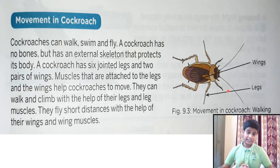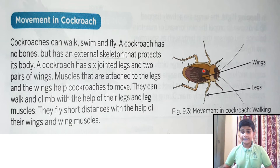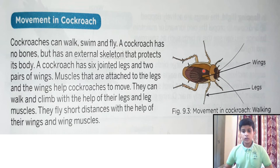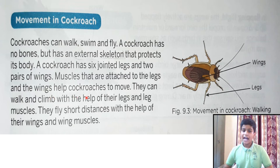We can see the cockroach has two pairs of wings — one is the outer wing and one is the inner wing. These wings help it to fly. The legs are the main body part. They help the cockroach to move. It can walk and climb with the help of its legs and leg muscles. It flies short distances with the help of its wings and wing muscles.